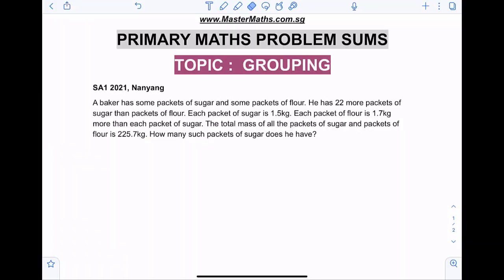Okay, we have a grouping question ahead of us. A baker has some packets of sugar and some packets of flour. He has 22 more packets of sugar than packets of flour. What does this mean? This means that sugar will be more, sugar will be more by 22.